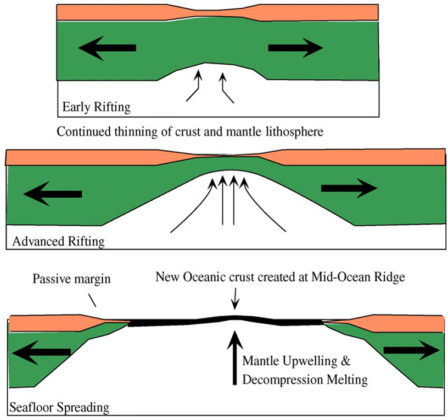Complex transitional crust is characterized by abandoned rifts and continental blocks, such as the Blake Plateau, Grand Banks, or Bahama Islands offshore eastern Florida.